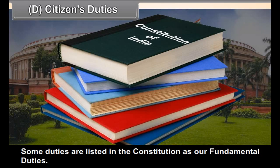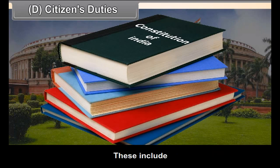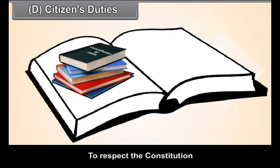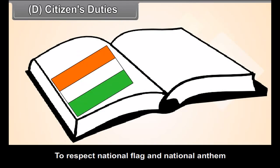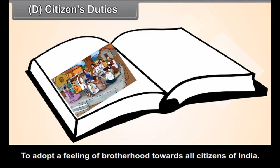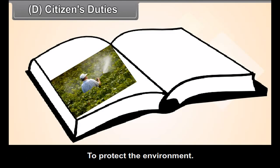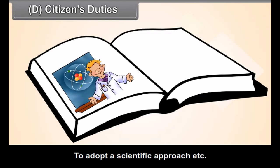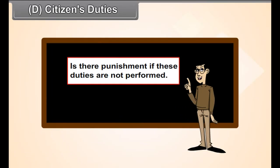Some duties are listed in the Constitution as fundamental duties. These include: to respect the Constitution; to respect the national flag and national anthem; to protect the country; to adopt a feeling of brotherhood towards all citizens of India; to protect the environment; and to adopt a scientific approach. Is there punishment if these duties are not performed?